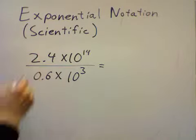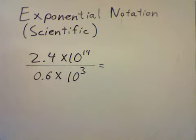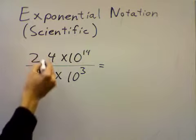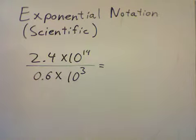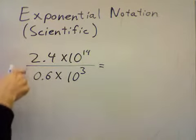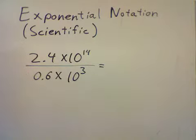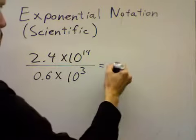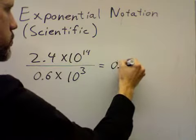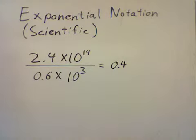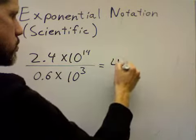Well, first I can separate this out into two different problems. I can say 2.4 divided by 0.6. If I divide 2.4 over 0.6, I get 4.